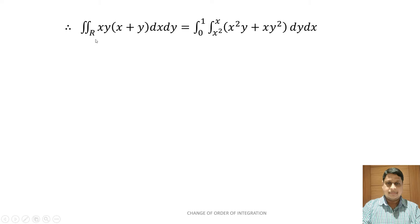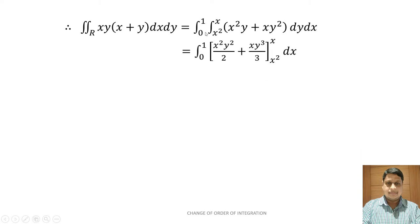Therefore, the double integral over R of x·y·(x + y) dx dy equals double integral from 0 to 1, x² to x. Multiplying x·y with (x + y), we get x²y + x·y². Integrating with respect to y: integration from 0 to 1 of [x² · y²/2 + x · y³/3] with limit x² to x, dx.